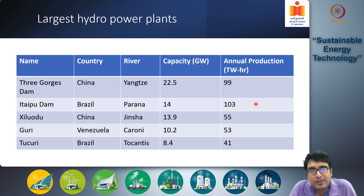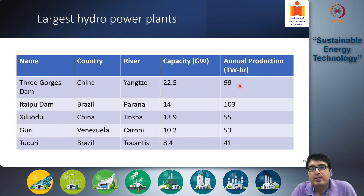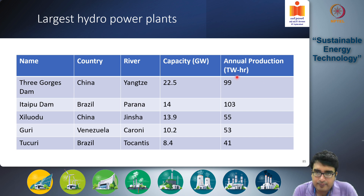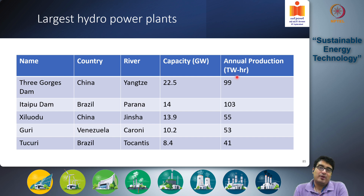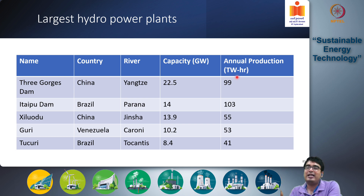What are the largest hydropower plants? The Three Gorges Dam in China is the largest hydropower plant currently operating, with a capacity of 22.5 gigawatts and annual production of around 100 TWh. It's important to understand the difference between capacity and annual production — the difference is the capacity factor. Capacity multiplied by the number of hours in a year multiplied by the capacity factor gives you the annual production.